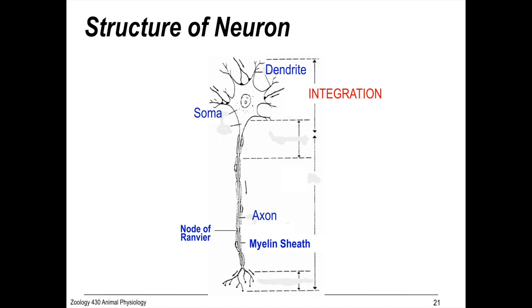Integration happens in the soma, and this is a spike initiation zone right here called the axon hillock.